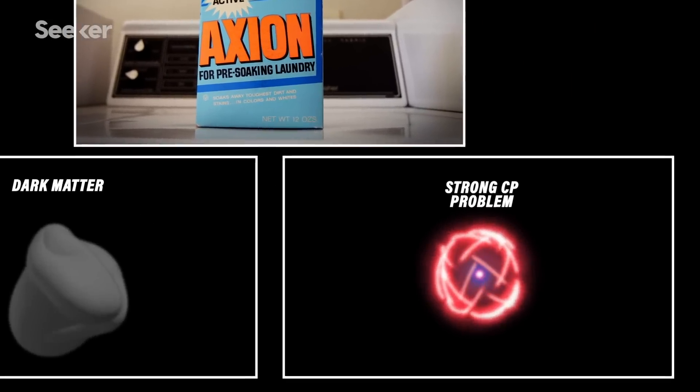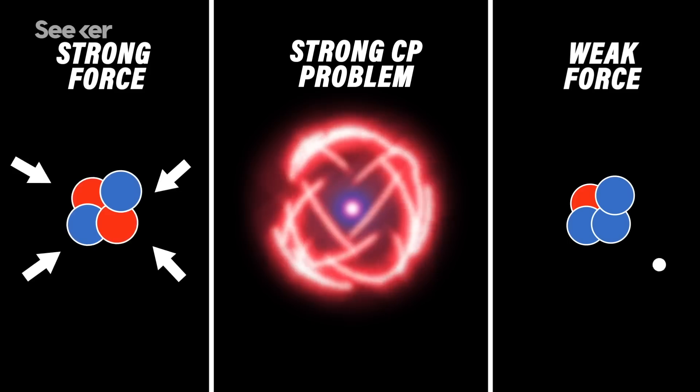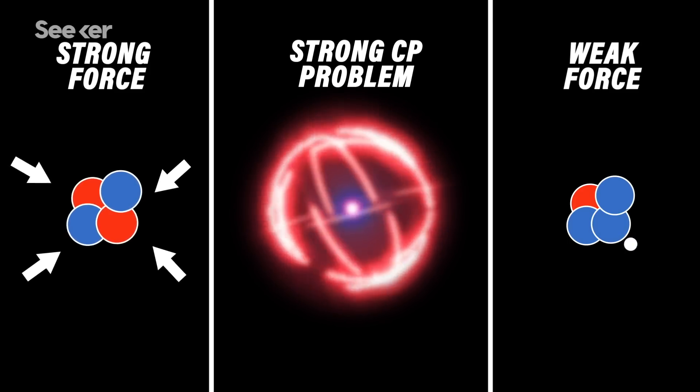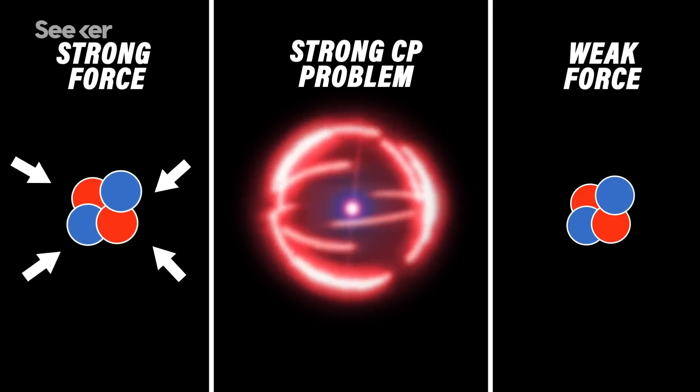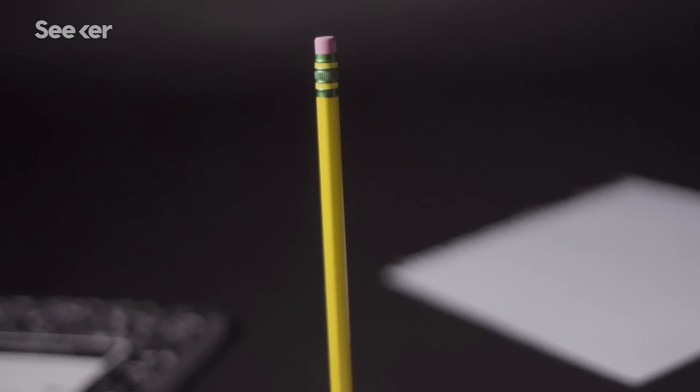Dark matter and the strong CP problem. This is another perplexing mystery that involves a surprising balance between two of the fundamental forces of nature. The strong force and the weak force. One way to think about it simply is if you see a pencil that's kind of just sitting there on its head and not falling over...